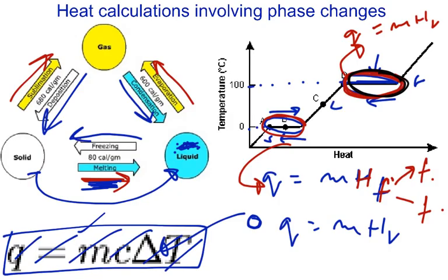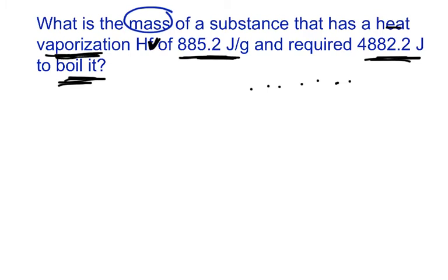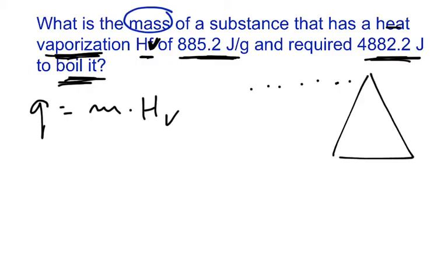So, as we remember, boiling is a phase change. There's no change in temperature, so we cannot use this equation. So, since they said vaporization, and they give us HV, we can assume that we're using Q equals to M times H of V as our equation. And we can also rewrite this equation as Q is equal to M times H of V.